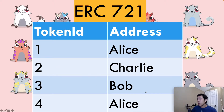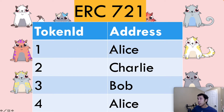Token ID 3 is owned by Bob. Every single token ID must have its own address, and every token ID-to-address pair must be stored on the blockchain. If an owner owns multiple tokens, there are separate rows to demonstrate that ownership. For example, Alice owns two tokens — token ID 1 and token ID 4 — and the ERC-721 contract has to store both pieces of information separately.